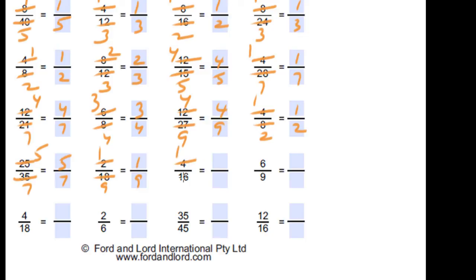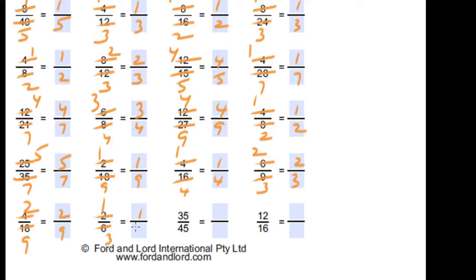4 times 1 is 4 and 4 times 4 is 16, so 1 over 4. 3 times 2 is 6 and 3 times 3 is 9, so 2 over 3. 2 times 2 is 4 and 2 times 9 is 18, so 2 over 9. 2 times 1 is 2 and 2 times 3 is 6, so 1 over 3.